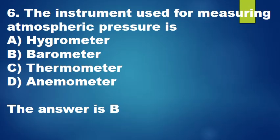Question 6: The instrument used for measuring atmospheric pressure is: A. Hygrometer, B. Barometer, C. Thermometer, D. Anemometer. The answer is B.